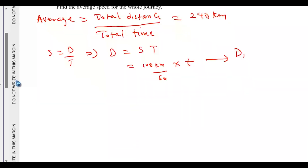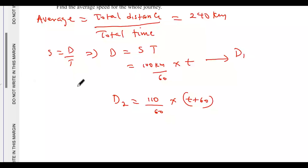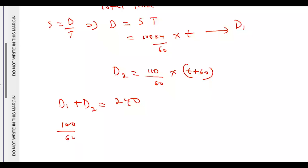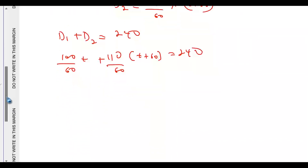For the second leg: d2 = (110 ÷ 60) × (t + 60). Since d1 + d2 = 240, we write: (100/60)t + (110/60)(t + 60) = 240. To simplify, multiply everything through by 60: 100t + 110(t + 60) = 14400.